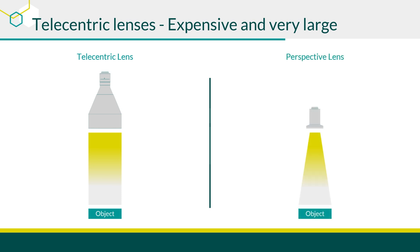Perspective lenses, on the other hand, are smaller, less expensive, and can provide a large field of view by adjusting the working distance, making them a cost-effective alternative. However, they produce images with perspective errors, as mentioned earlier in this video. The Area Scan Portal effectively addresses these challenges by providing a cost-effective solution for fast, true-to-form and true-to-scale contour extraction.